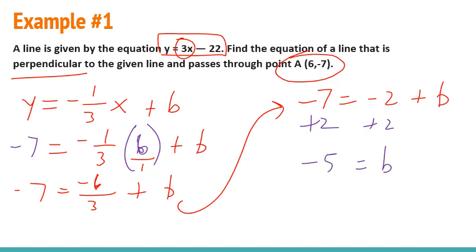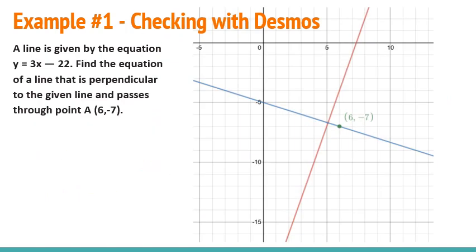So now I can put that into one single equation for my final answer. So I'm going to say my perpendicular line is negative 1 third x minus 5. As always, you want to check with Desmos to make sure you're right. It'll basically give you instant confirmation that you did this correct.